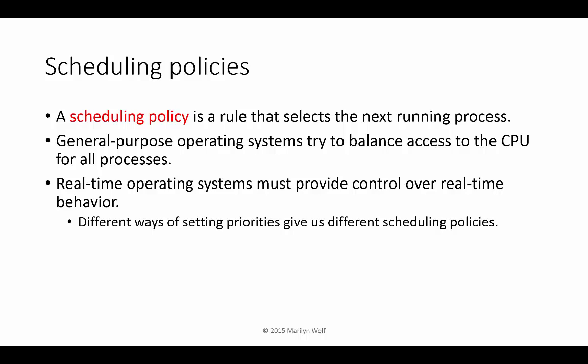General purpose operating systems try to balance the load across a number of different tasks, but they don't have to worry about timing guarantees. Real-time operating systems, in contrast, have to make sure that tasks finish at certain times. Priority-driven scheduling is one way to help do this, and one of the advantages is that different ways of setting priorities give us different scheduling policies without changing the underlying code that uses the policies.